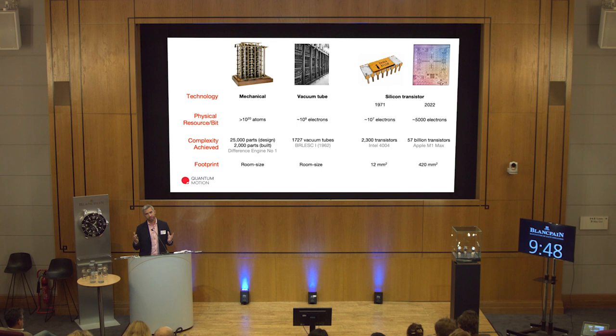To understand how this was possible, let's look at the physical resource used to encode each piece of information. For mechanical computers, we used vast Avogadro-number-scale numbers of atoms to encode information in the positions of gears. In valve computers, it was billions of electrons. By moving to the silicon transistor, we advanced from using millions of electrons in the first microprocessors to today, where individual bits of information are stored using just 5,000 electrons. That's a remarkable harnessing of nature — but it also tells us we still have some way to go.